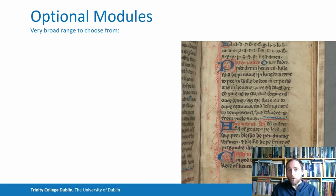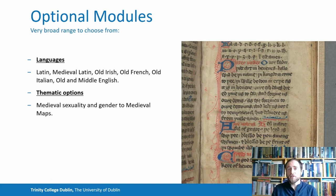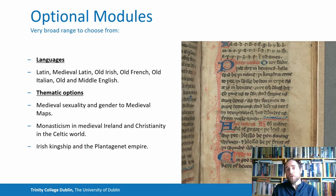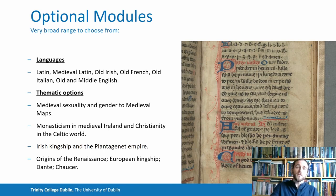One of the main strengths of this course is the range of expertise on offer. In terms of languages, there's a huge variety to choose from: you can study Latin — both classical and medieval forms — Old Irish, Old French, Old Italian, as well as Old and Middle English. There's also a broad range of thematic options. You can take modules in the history of medieval sexuality and gender, medieval maps, the history of monasticism in Ireland and Europe, the development of Christianity within the Celtic world — Ireland, Scotland and Wales — Irish kingship, the Plantagenet empire, the origins of the Renaissance, European kingship, the writings of Dante Alighieri, and the English author Geoffrey Chaucer.